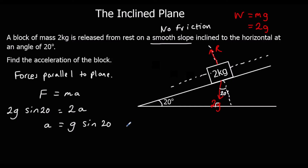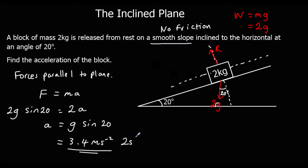We type into the calculator 9.8 sine 20, and to two significant figures we get 3.4 metres per second squared.